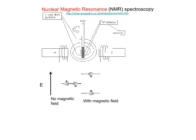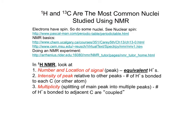Nuclear magnetic resonance is a very common and important structure characterization method. In proton NMR, three pieces of information help us determine the structure of a compound: the number and location of the peaks, the intensity of the peak, and the multiplicity.